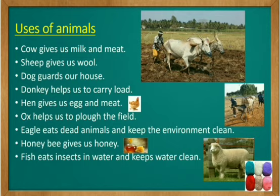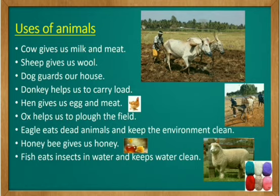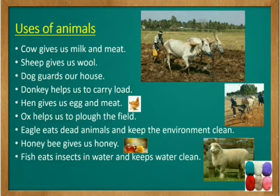In olden days they used donkeys to carry goods. Hen gives us egg and meat. Ox helps us to plough the field — see the picture on top; a farmer is ploughing his field. Eagle eats dead animals and keeps the surroundings clean. Honeybee gives us honey. Fish eats insects in water and keeps water clean. Here ends the first chapter. Thank you, children.